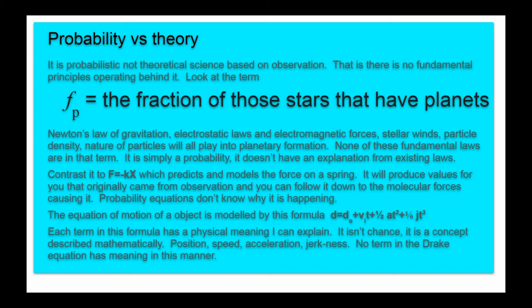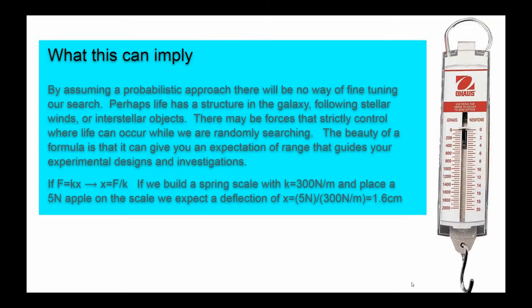It isn't chance. It is a concept described mathematically, position, speed, acceleration and jerkiness. No term in the Drake equation has a meaning in this manner. We can look at another weakness of a probability formula versus a physical constant formula. This has implications for what we can do with a probability formula. By assuming a probabilistic approach, there will be no way of fine-tuning our search because there could be fundamental laws underlying it that we won't discover. Perhaps life has a structure in the galaxy. It follows stellar winds or interstellar objects. There may be forces that strictly control where life can occur while we are using a probability, a random method of searching.